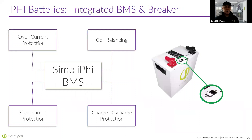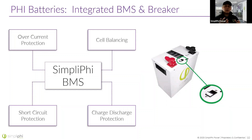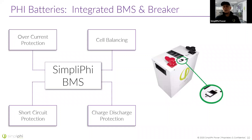We also have an integrated BMS internal to the batteries and a circuit breaker on top. The BMS handles overcurrent protection, short circuit protection, charge and discharge over- and under-voltage, and most importantly, cell balancing. The breaker on top adds additional overcurrent protection, but it's also a really handy feature for installing — especially in mobile systems where you don't have a lot of space. You're working in a tight space and it can be really nice to just turn that battery off while you're installing it so no sparks fly, then simply turn it back on once everything is wired up.